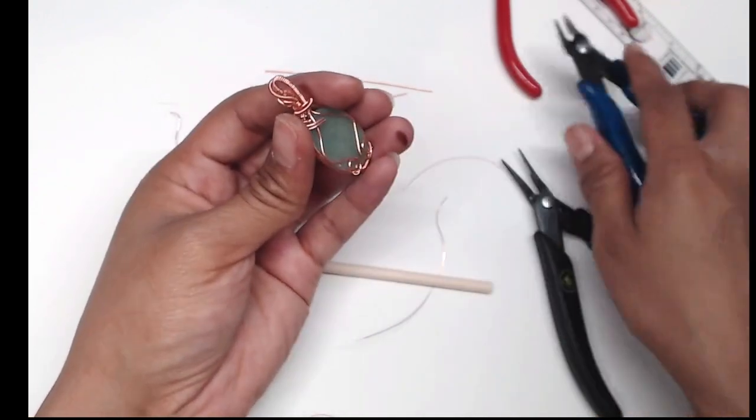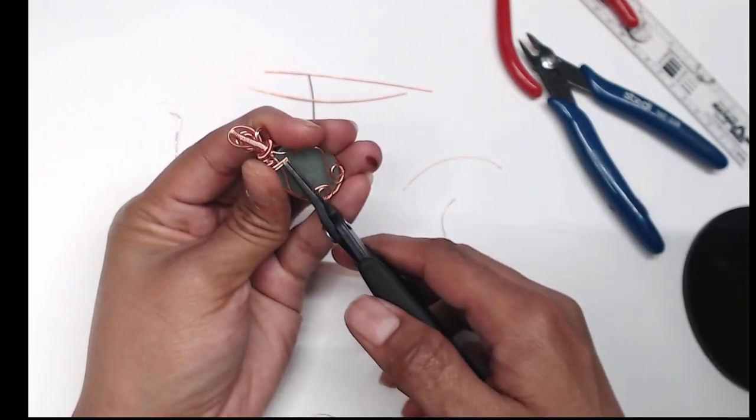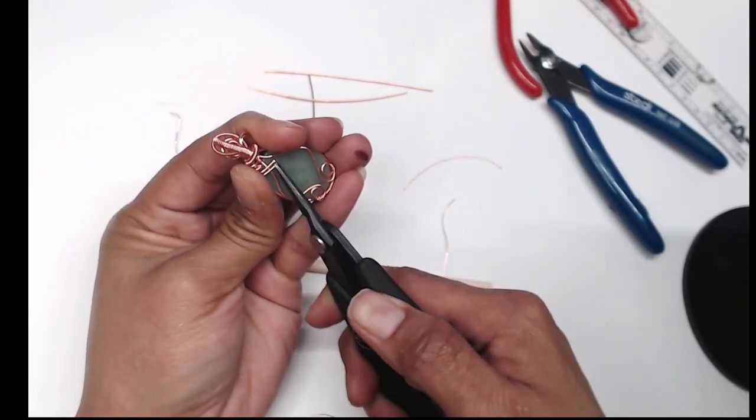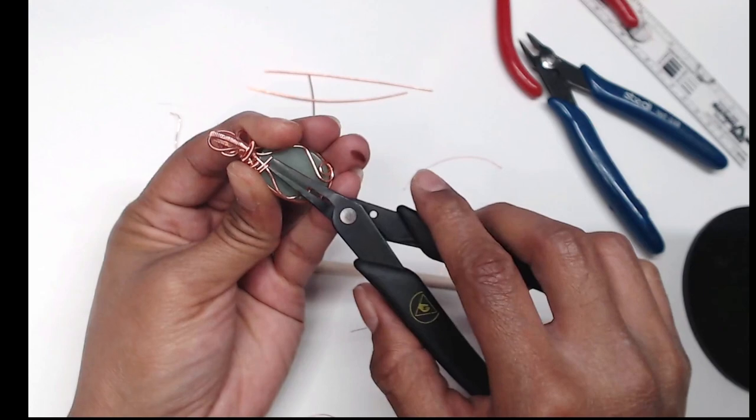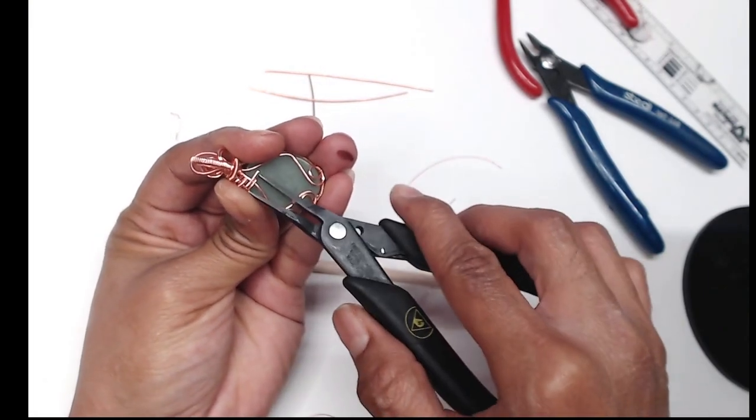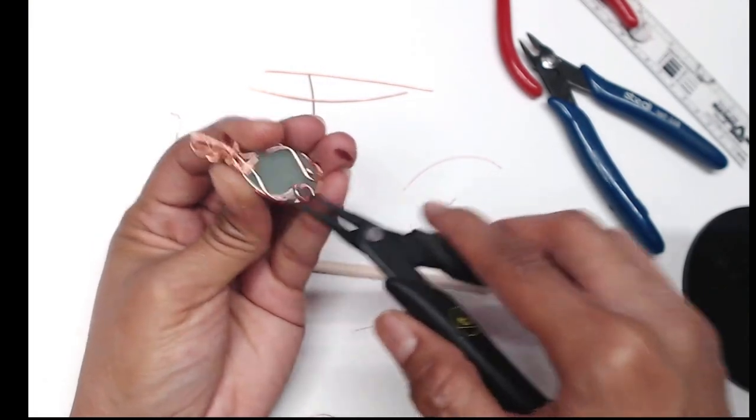This part may take some practice in getting used to learning how to curl the tip and get it under your wire and then carefully use your pliers to kind of add pressure and force to it so that there's tension there to keep it in place.